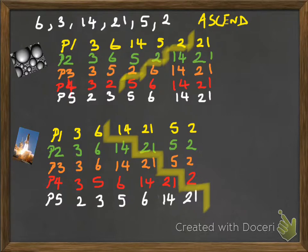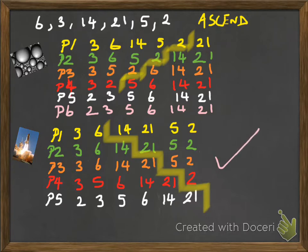So that's complete. Now, here's the interesting thing. For the bubble, because I made a swap, I've got to go through again. So I actually have to do Pass 6. Consider 2 and 3, no swap. 3 and 5, no swap. 5 and 6, no swap. 6 and 14, no swap. 14 and 21, no swap. So, it looks like in my exciting race, Shuttle won for speed.